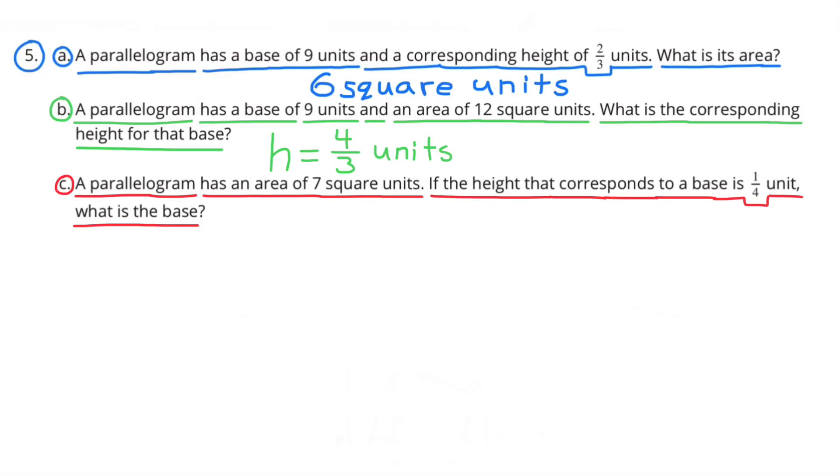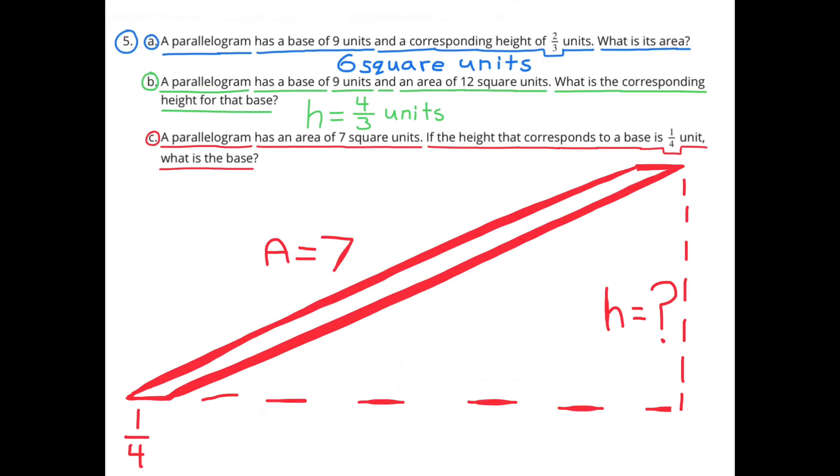C. A parallelogram has an area of seven square units. If the height that corresponds to a base is one-fourth unit, what is the base? This illustration represents a parallelogram that has an area of seven units and a base of one-fourth unit. The height is unknown.